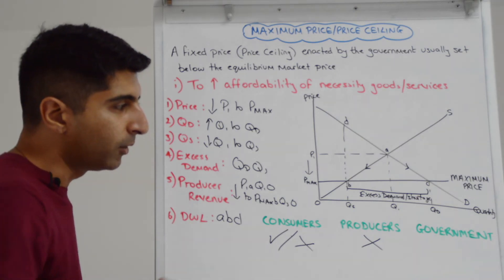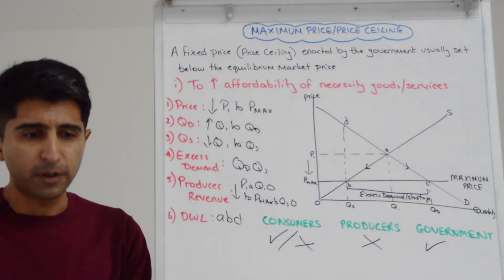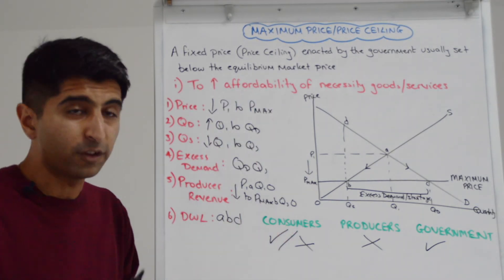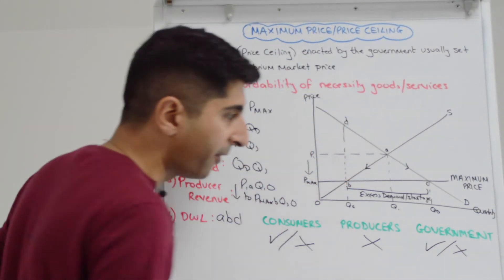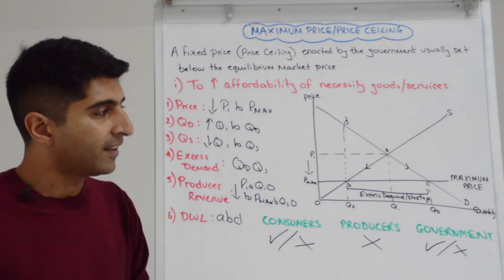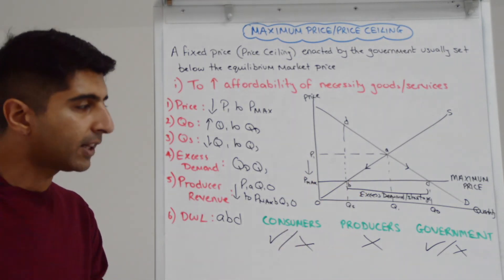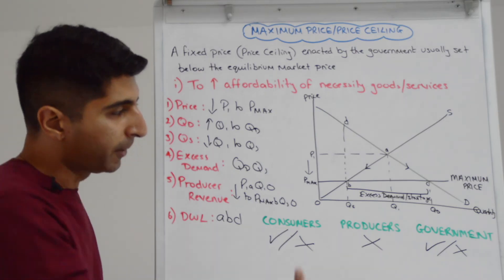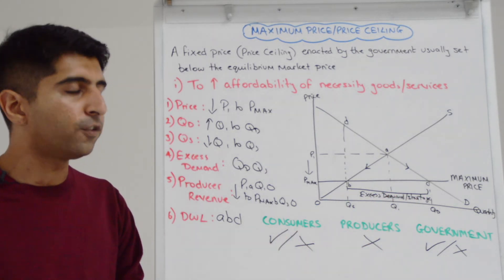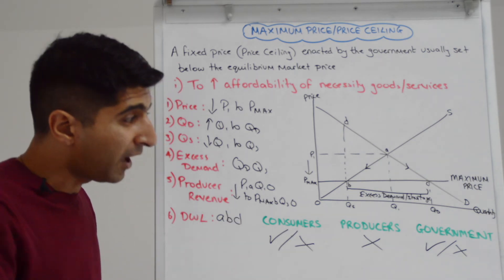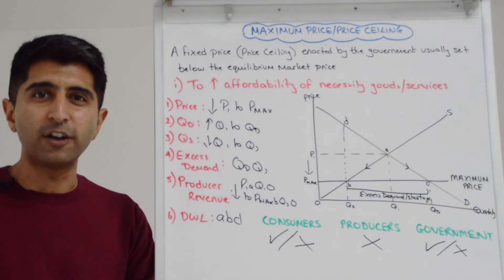What about the government? Well, we can argue if the government's hitting their key goal, some consumers are benefiting because of the lower price. They'll be happy about that. But they'll be very, very concerned about the other impacts of this maximum price. In particular, the impact on producers and how a lot of producers will be leaving the market, the contraction of supply. But of course, the big excess demand and what that means for many, many consumers. Also, the unintended consequences of black markets forming, they'll be very, very concerned about those kinds of impacts.